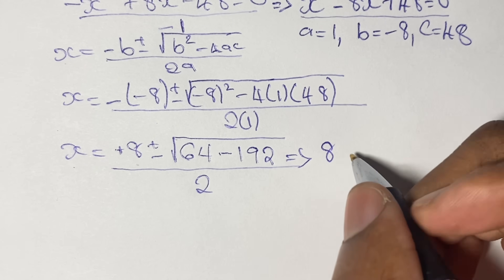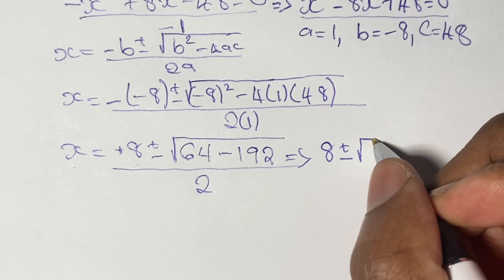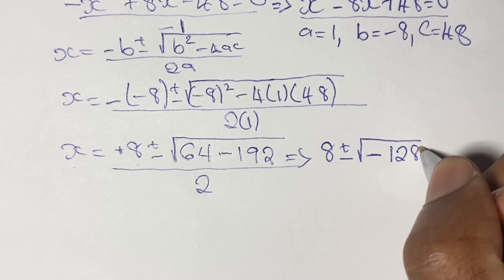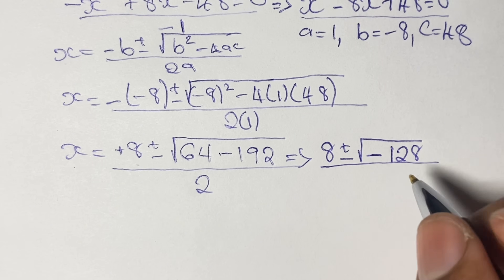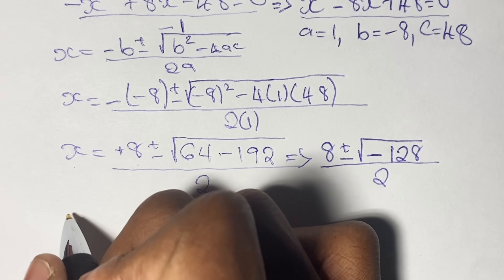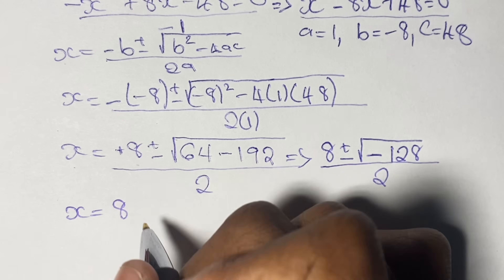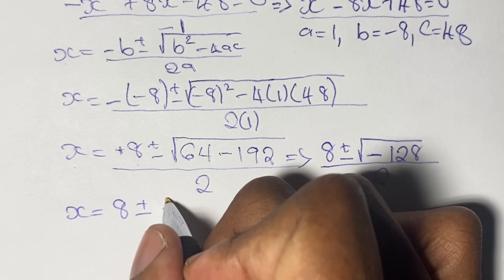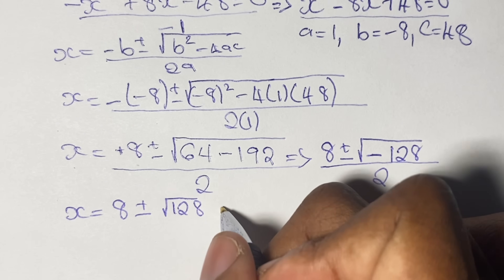This means x equals 8 plus or minus the square root of negative 128, all over 2. As mentioned earlier, our solutions for x and y are going to be complex, and indeed we have the square root of a negative number, which confirms the complex nature of this problem.